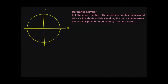In this video we're going to be introducing a new concept called reference numbers. Let t be a real number. The reference number t-bar associated with t is going to be the shortest distance along the unit circle between the terminal point p, determined by t, and the x-axis. That's a little wordy, so let's look at some examples.